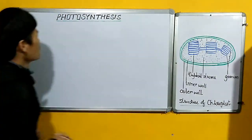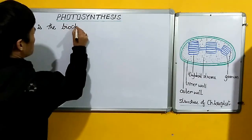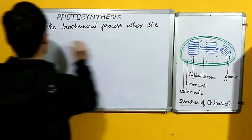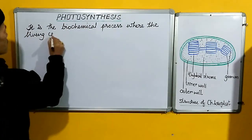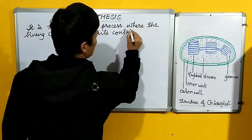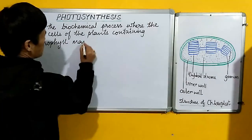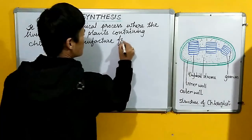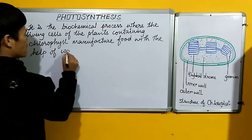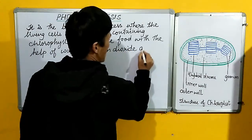Photosynthesis by definition means the biochemical process where the living cells of the plants containing chlorophyll manufacture food with the help of water, carbon dioxide and sunlight.